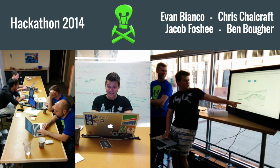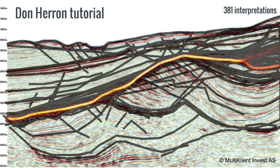The live demo was pretty cool because the deployed app was running and the room full of people got to pick the line live right in the demo and see the results sort of instantaneously. It's been on the web now for quite a while — Don Heron's example now has over 380 interpretations. Here's a heat map from a few weeks ago, right before SEG. You can see the orange glowing unconformity where most people agree, and then there are places, like on the right, where it bifurcates and people have disagreed.